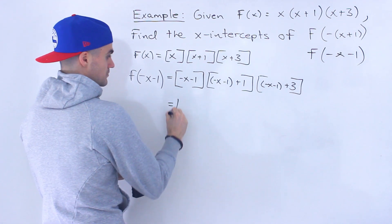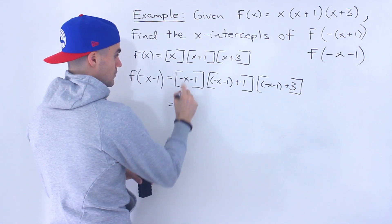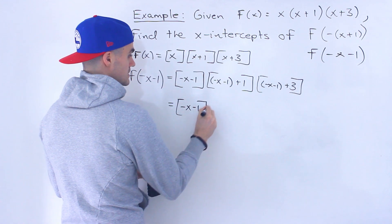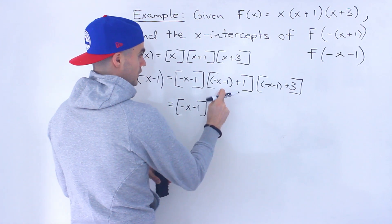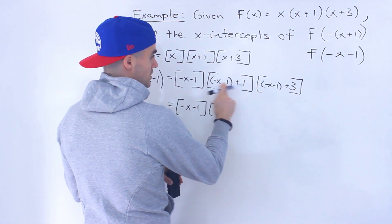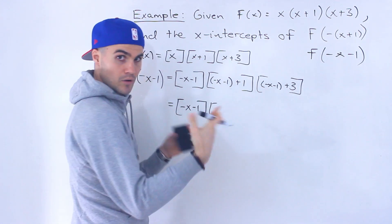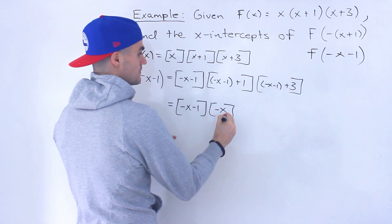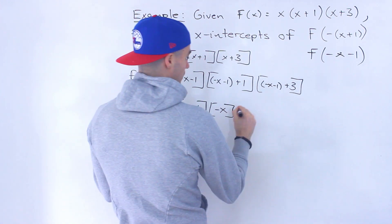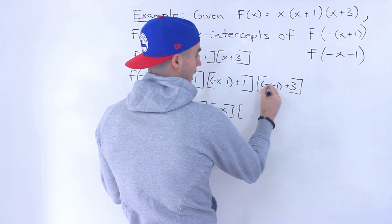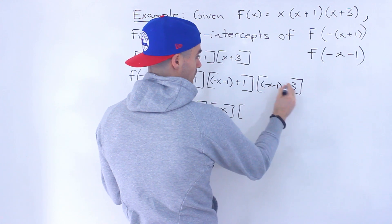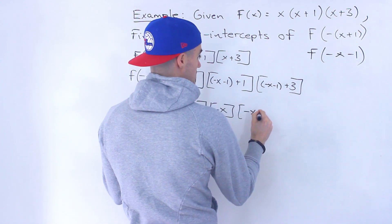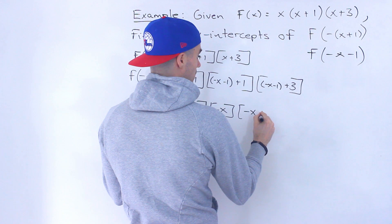Now we just simplify. The first factor stays as negative x minus 1. In the second factor, negative x minus 1 plus 1 — the negative 1 and positive 1 cancel out, leaving just negative x. In the third factor, negative x minus 1 plus 3 gives us negative x plus 2.